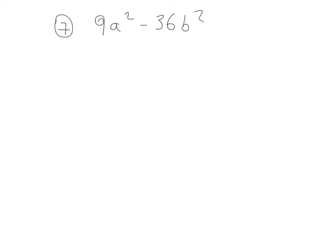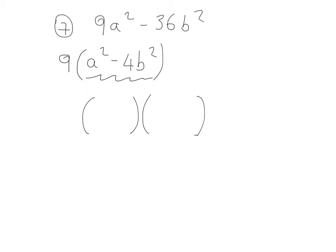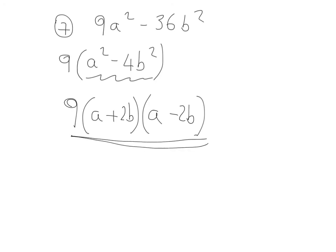Factorise 9a squared minus 36b squared. First of all, there's a highest common factor of 9. So that's 9 bracket a squared minus 4b squared. We can now do a difference of two squares inside: bracket with a plus, bracket with a minus. The square root of a squared is a. The square root of 4b squared — well, square root of 4 is 2 and square root of b squared is b, so that's 2b. There's a 9 at the front. Final answer: 9 bracket a plus 2b, bracket a minus 2b.